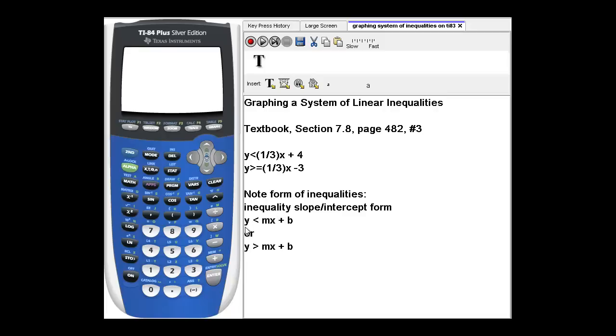So they're in the form y is less than mx plus b or y is greater than mx plus b. Note y is all by itself on the left-hand side of the inequality, and all of the other terms are on the right-hand side of each of these inequalities. Note also that the coefficient of y on the left-hand side is 1 in both of these inequalities. That is what I call inequality slope intercept form.